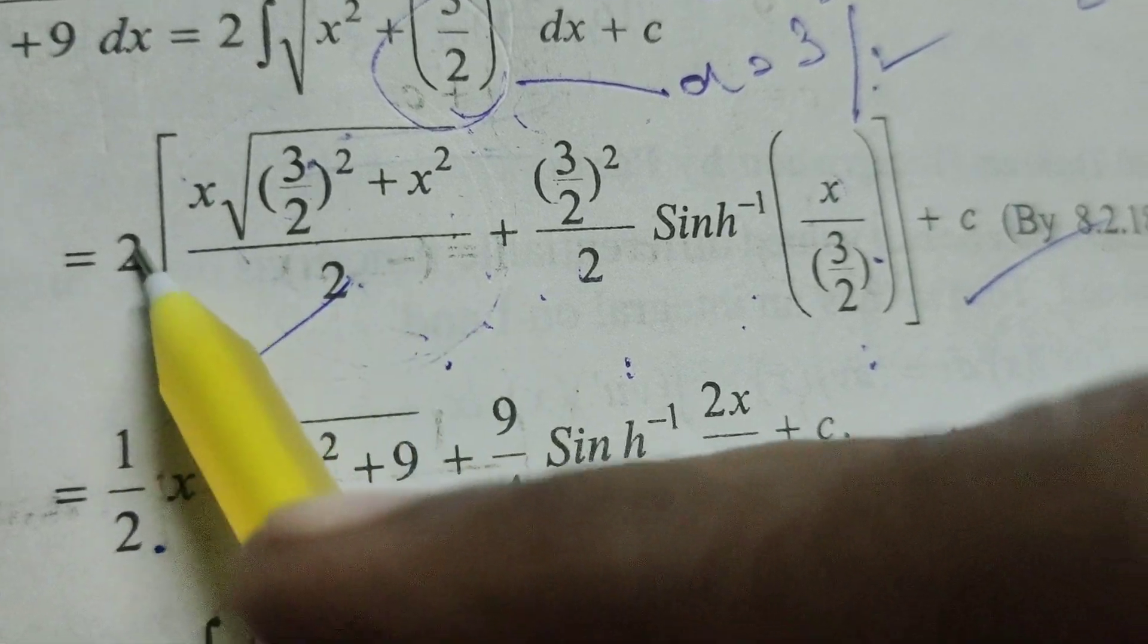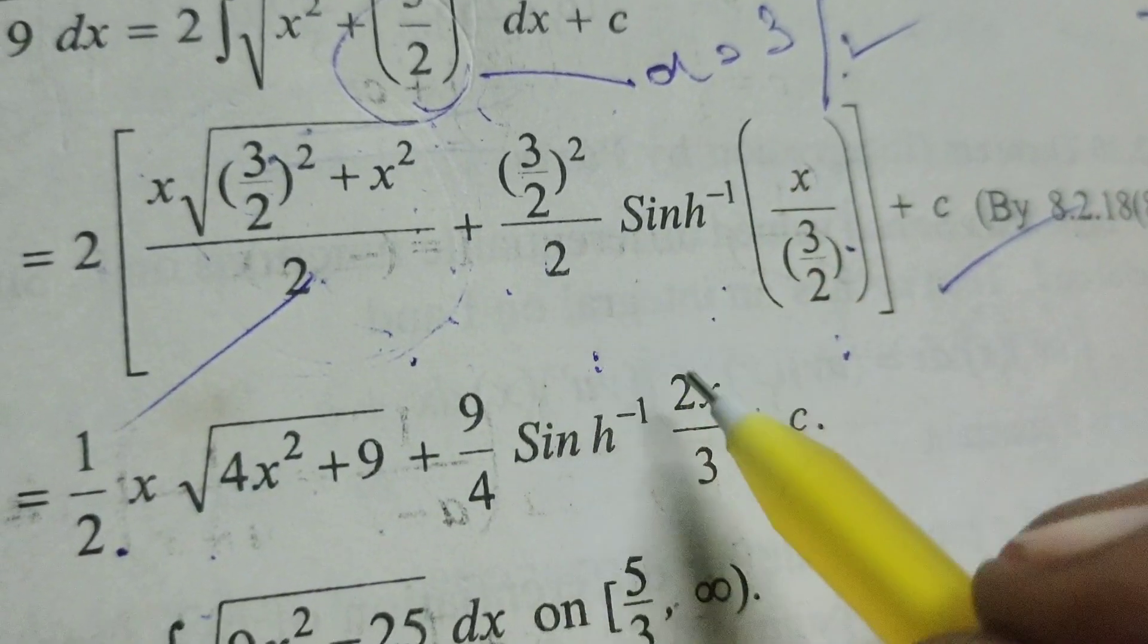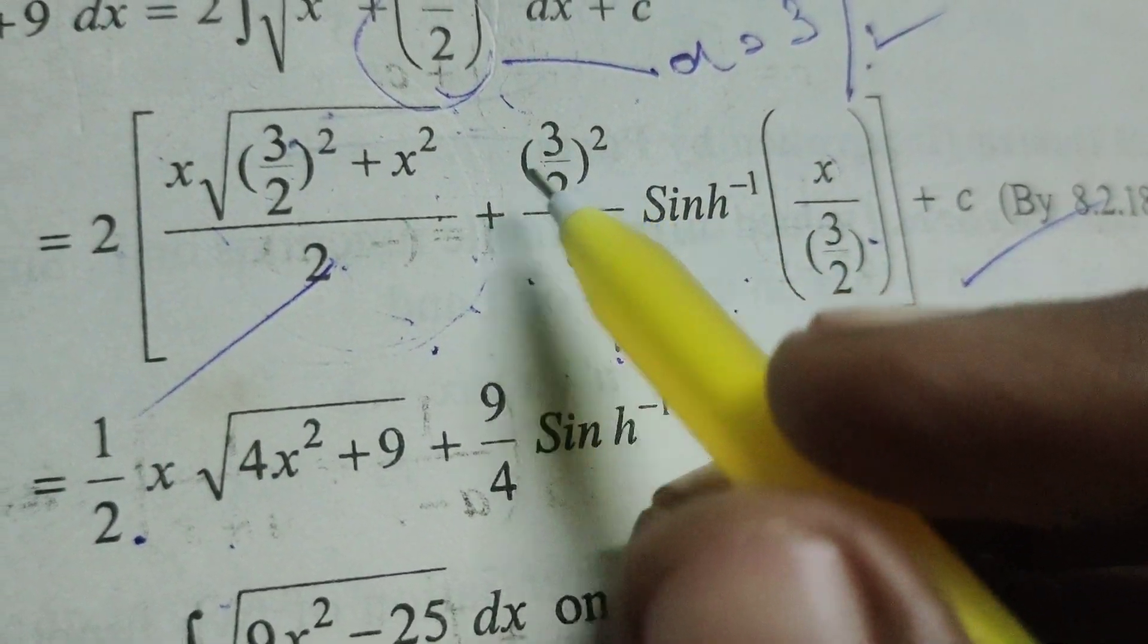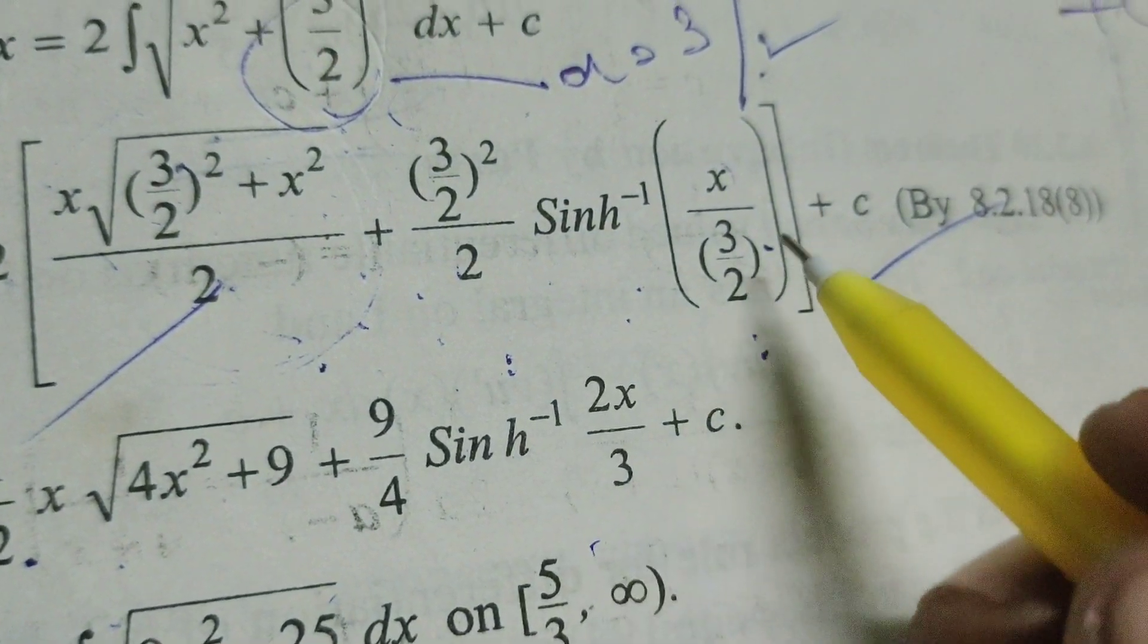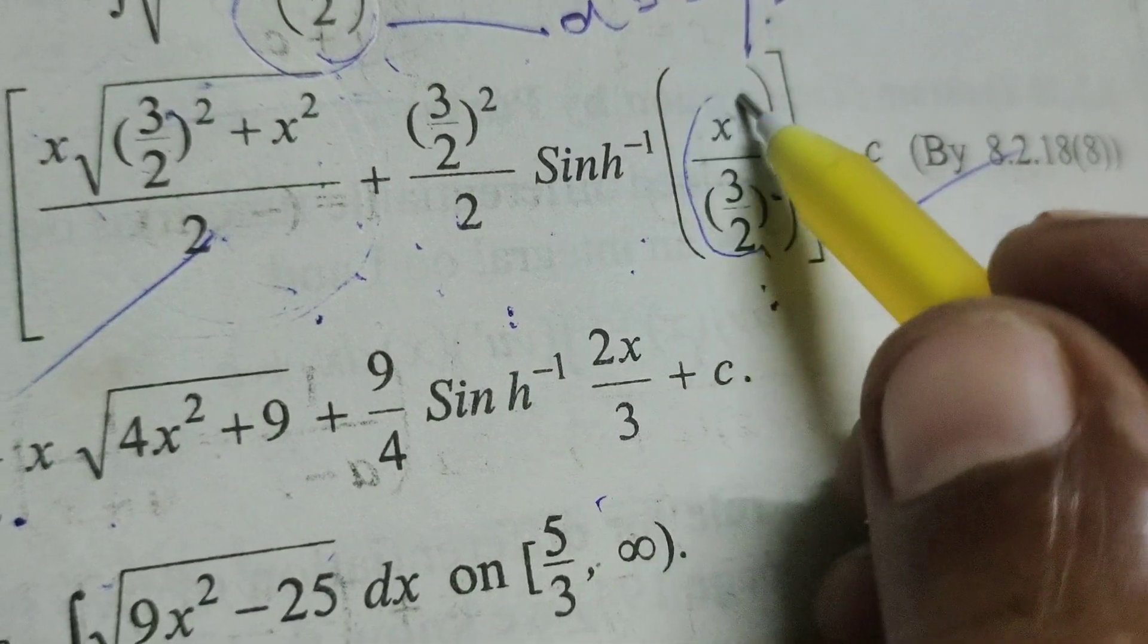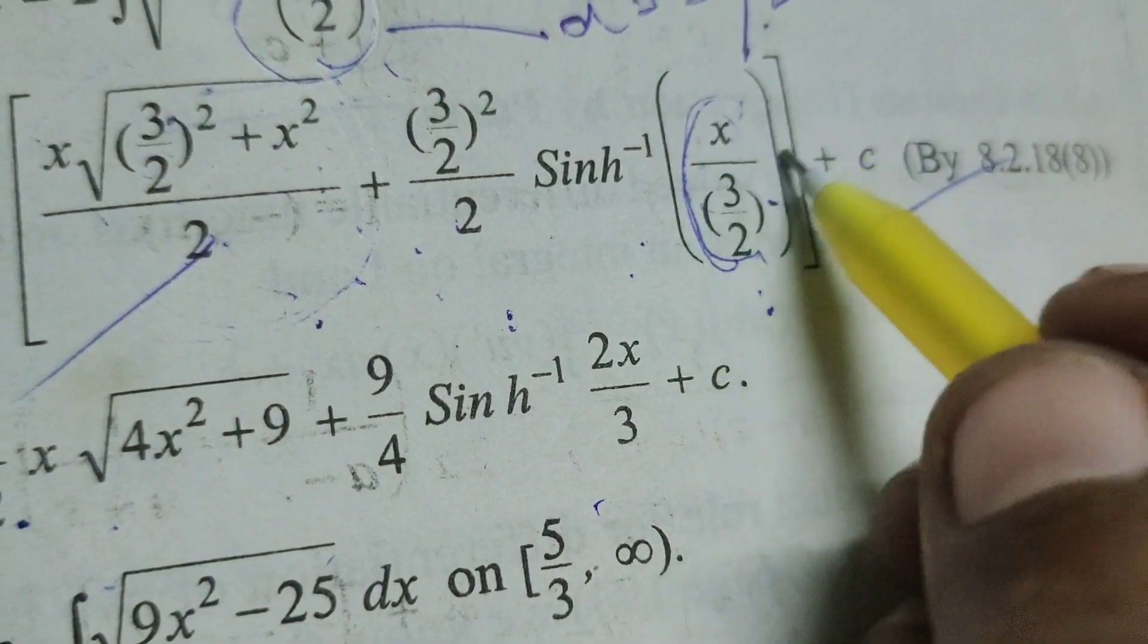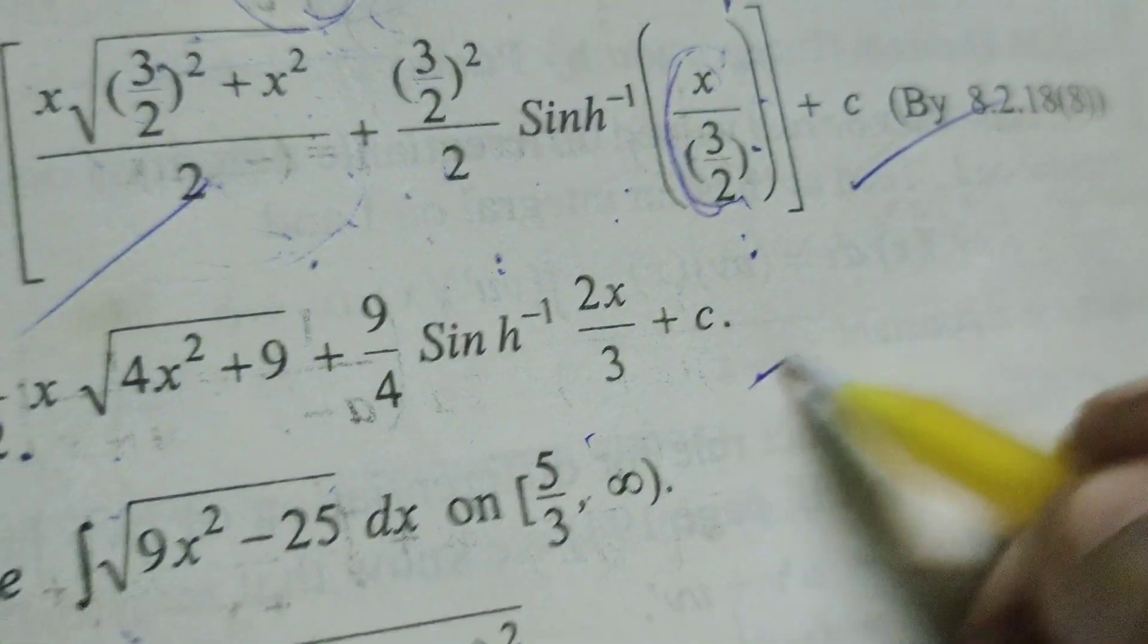Next that here also multiplied 2. Then 2, 2 gets cancelled. And 9 by 4 sinh inverse, in this denominator 2 we will get to transpose numerator 2x by 3 plus c.